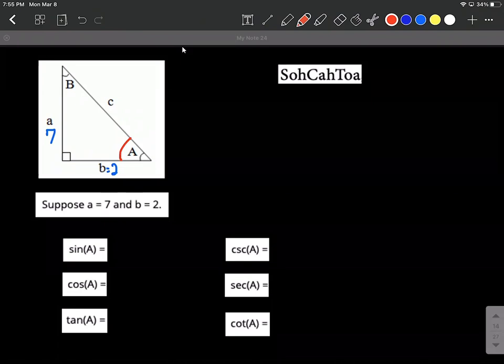Side a we can refer to that as being the opposite side from angle A. We can say side b is going to be the adjacent side to angle A and we'd say c is going to be the hypotenuse. The hypotenuse is always across from the right angle.